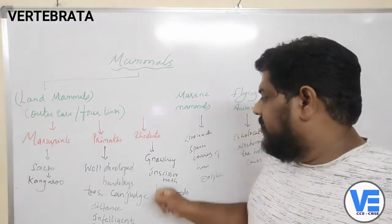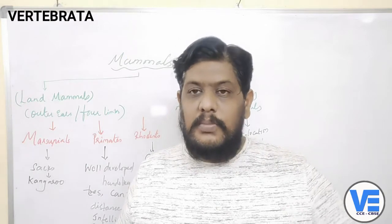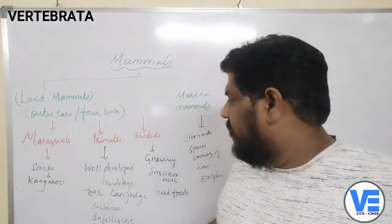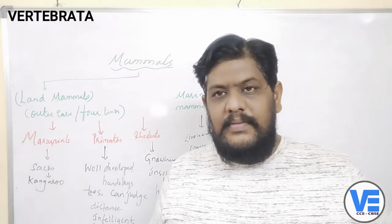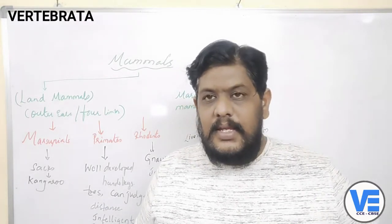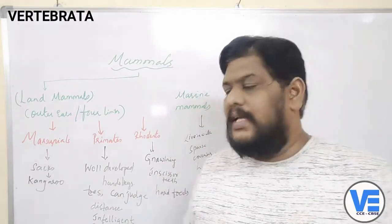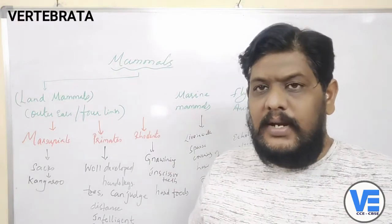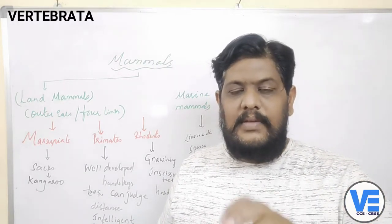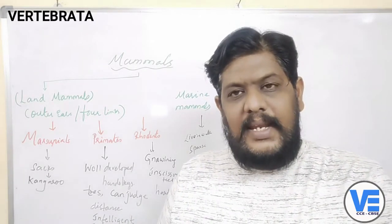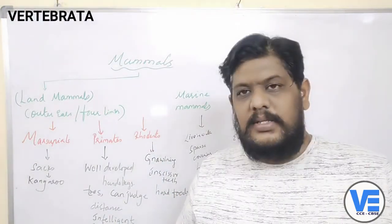The third group is rodents. Rats and bandicoots are examples — animals that bite food. They belong to the group called rodents. They have incisor teeth; there are four different kinds of teeth: incisors, canines, premolars, and molars. Rats have strong incisors and can bite very hard foods, using these incisor teeth like a chisel. The rat is the best example for the group called rodents.